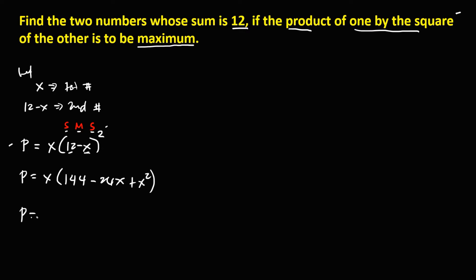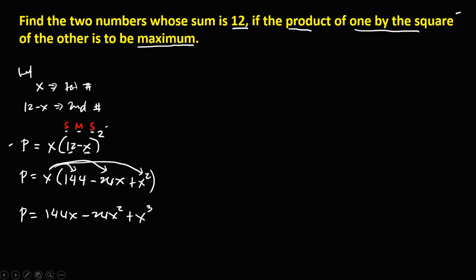Now we distribute the x to every term. So P equals 144x minus 24x squared plus x to the power of 3.